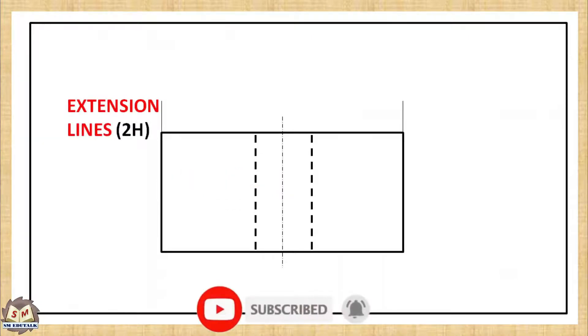Extension or projection lines are continuous thin lines extending beyond the outline of the object. They help to position the dimension line. Use 2H pencil to draw these lines.